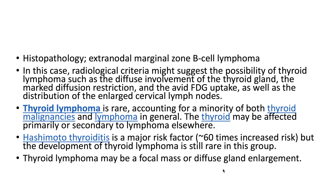The histopathology revealed an extranodal marginal zone B-cell lymphoma. In this case, radiological criteria that might suggest the possibility of thyroid lymphoma include the diffuse involvement of the thyroid gland, the marked diffusion restriction, the avid FDG uptake, and the distribution of the enlarged cervical lymph nodes.